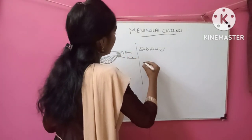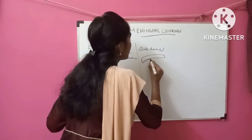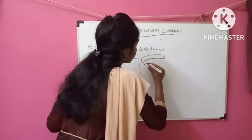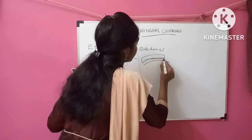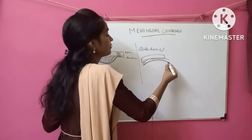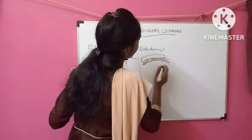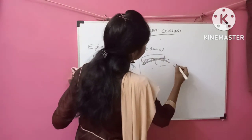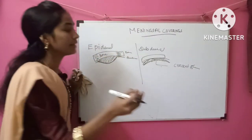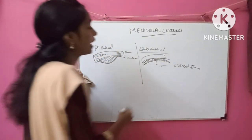Likewise, in subdural hemorrhage — this is the bone tissue, this is the dura mater closely attached with the bone tissue, and this is the arachnoid mater. If bleeding occurs in this region, the bleeding looks like a crescent shape — half moon shape. Crescent shape bleeding is present in subdural hemorrhage.